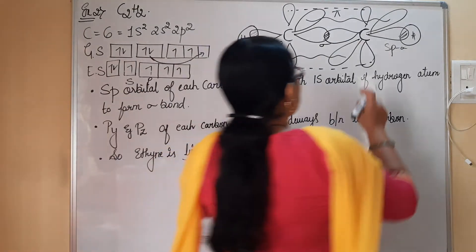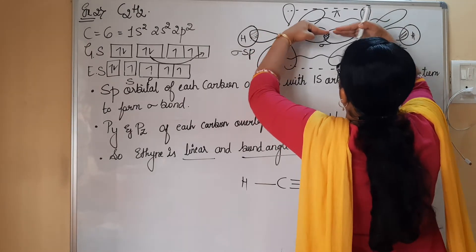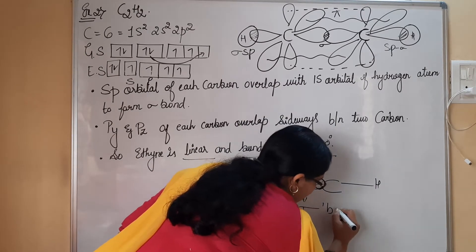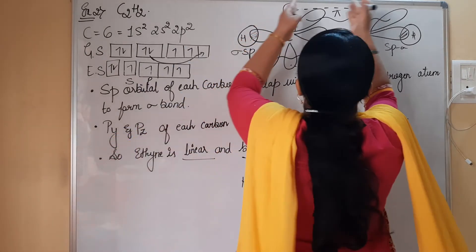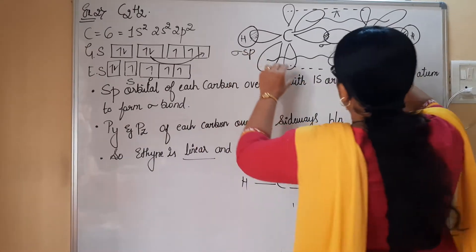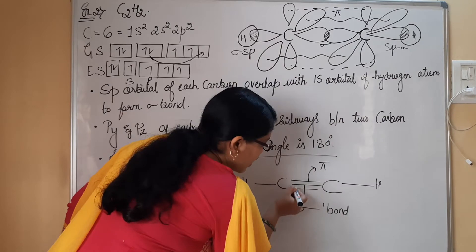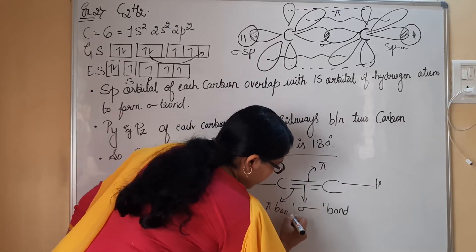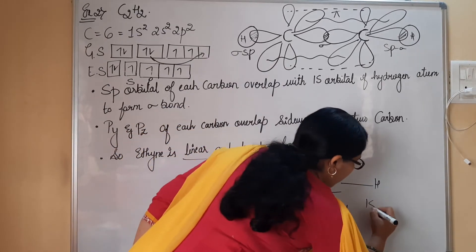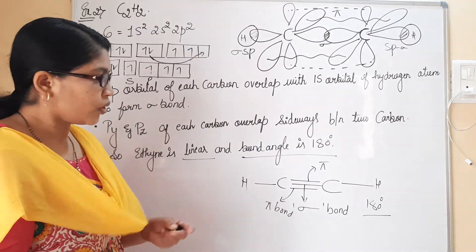The two p orbitals of the carbon atoms combine — the YY sideways combination gives the first pi bond, and the ZZ sideways combination gives the second pi bond. The carbon-carbon bond formed by head-on overlapping along the internuclear axis is the sigma bond. Since it is a linear molecule, the bond angle between the carbon atoms is 180 degrees.